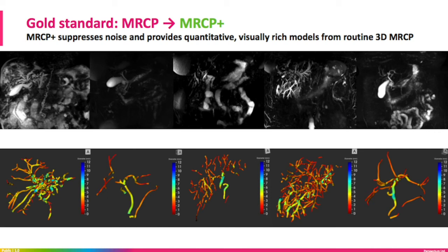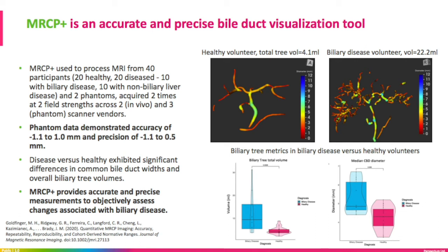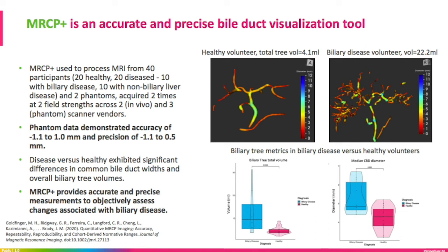Here we show five different patients. The metrics provided include diameters of the bile ducts and pancreatic duct, as well as the detection of narrowing and dilatations, and volumes of all the biliary tree. This case study had 40 participants — 20 healthy and 20 diseased — where the determination between the two relied on the total tree volume as well as individual duct diameters. The top left image is a healthy volunteer with total biliary tree volume within normal range, versus the one on the right, a diseased patient with higher total biliary tree volume. Validation data demonstrated an accuracy of about one millimeter, allowing repeatable and accurate models of the biliary tree, and signifying we can use the technology to quantitatively assess changes over time in patients with biliary disease.